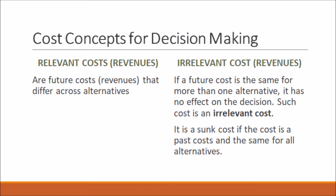Now, irrelevant costs or revenues: if a future cost is the same for more than one alternative, it has no effect on the decision. Such a cost is an irrelevant cost — it is also a sunk cost if it is a past cost the same for all alternatives. For example, if I buy a computer or if I make one, the fixed cost of electricity will be the same; the electricity bill is irrelevant in my decision because either way I'm still going to use electricity to run my computer. So electricity is irrelevant in the decision of buying or making a computer.